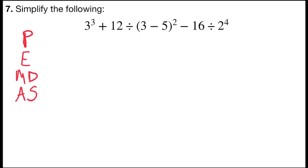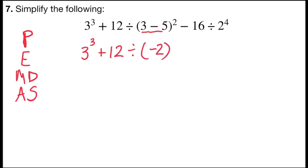So I'm going to start with my grouping symbols. I have parentheses, and I have 3 minus 5, and 3 minus 5 is negative 2. So I would have 3 cubed plus 12 divided by negative 2 inside the grouping symbols, squared, minus 16 divided by 2 to the 4th power.